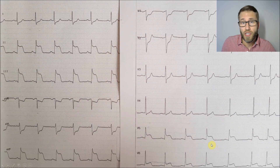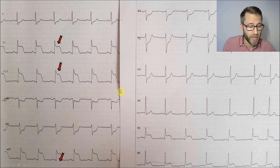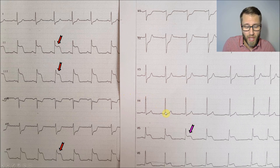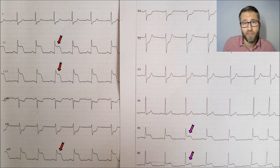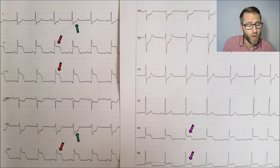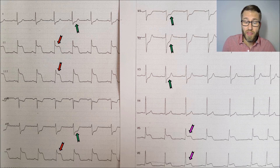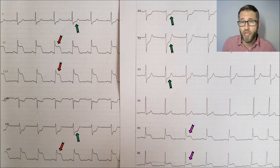If we have such an ECG with very easy-to-notice ST elevation in leads 2, 3, and AVF — an inferior myocardial infarction — but also ST elevation in V5 and V6 as a posterolateral myocardial infarction as well, and ST depression in leads 1 and AVL as well as in V1 to V3, if you have this pattern there are two different possibilities where the culprit lesion might be: it might be the RCA or the LCX.